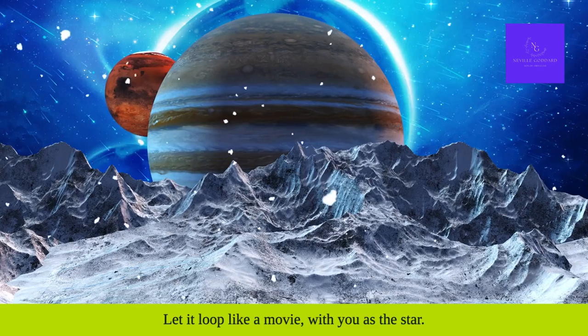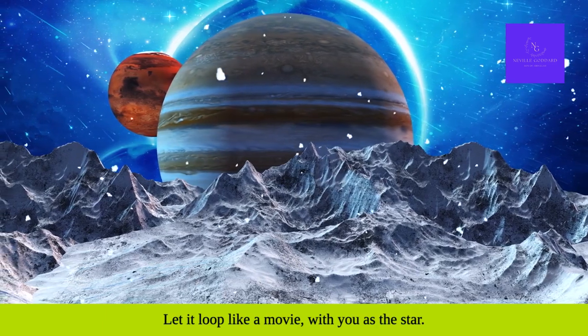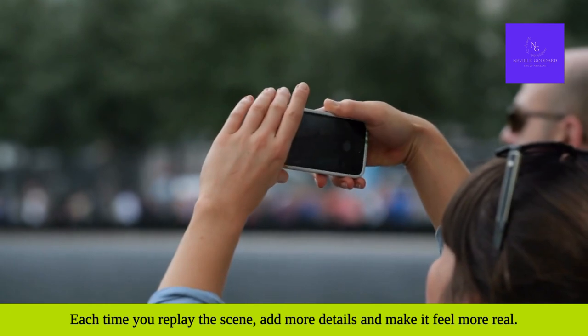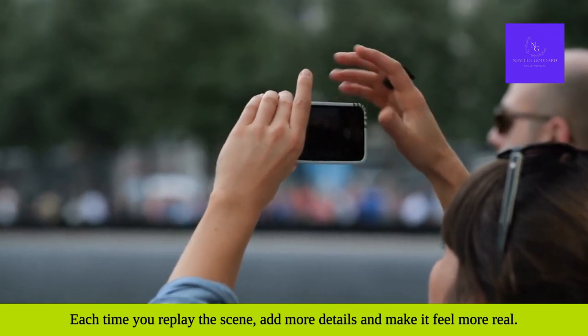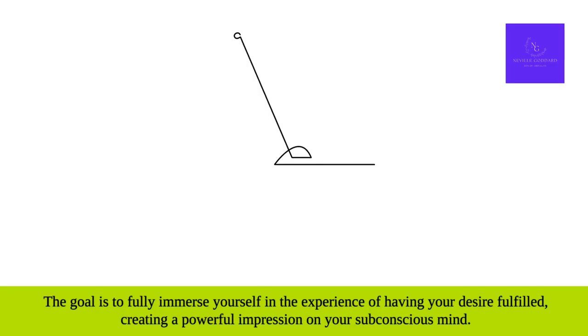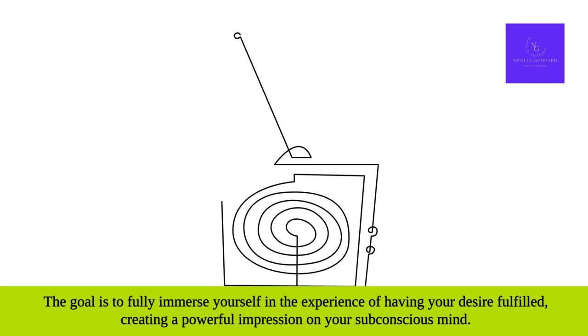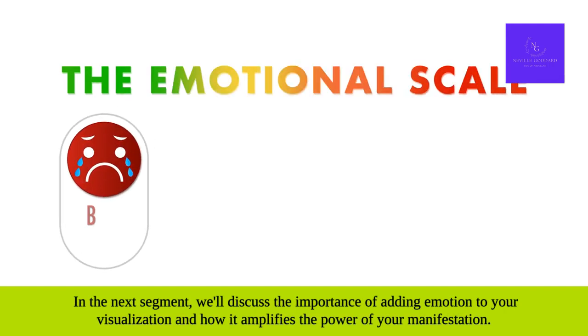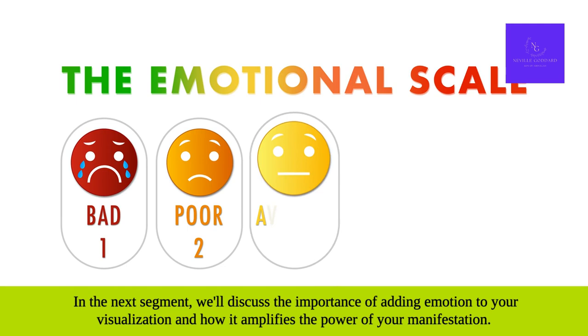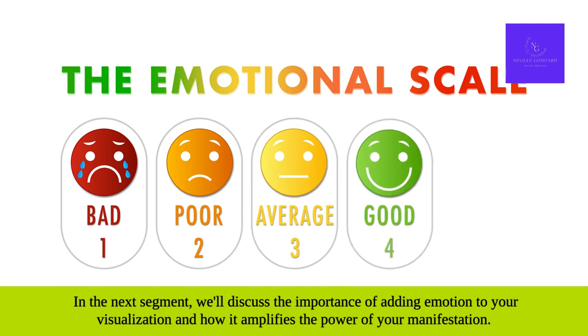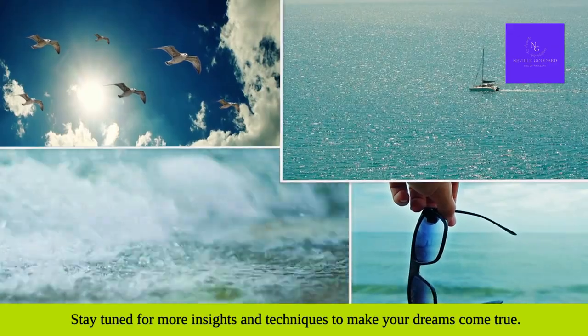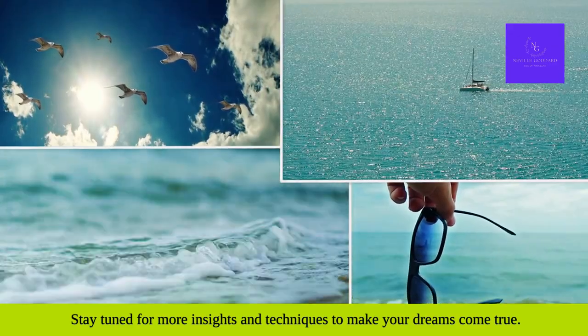Practice replaying this scene in your mind. Make the clip short but vivid — let it loop like a movie, with you as the star. Each time you replay the scene, add more details and make it feel more real. The goal is to fully immerse yourself in the experience of having your desire fulfilled, creating a powerful impression on your subconscious mind. In the next segment, we'll discuss the importance of adding emotion to amplify the power of your manifestation.